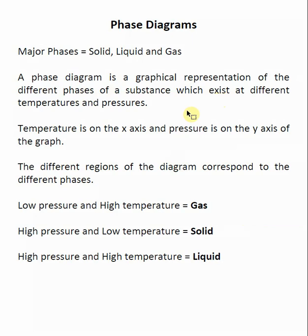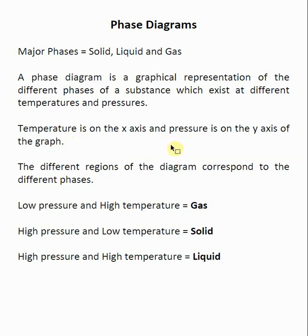In this discussion we're only going to talk about three major phases: solid, liquid, and gas. On the phase diagram, the temperature is on the x-axis and the pressure is on the y-axis. The units are variable, but they just need to be units of temperature and units of pressure.